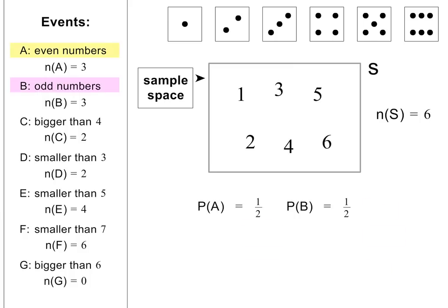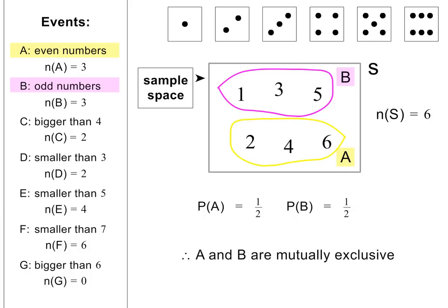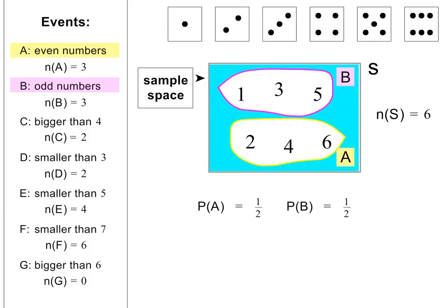Let's now have a look at two events at the same time, beginning with events A and B. This is what the events look like in our diagram, which is also called a Venn diagram. This clearly shows that events A and B do not overlap each other. We say that events A and B are mutually exclusive events. This is because a number cannot be even and odd at the same time. And because all numbers on a die are either even or odd, there are no numbers that lie outside A and B.